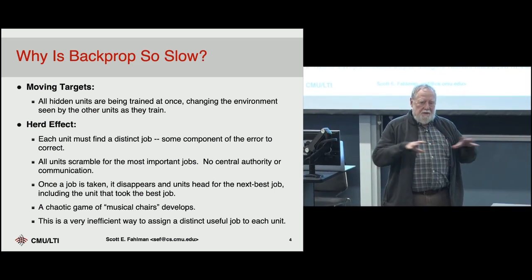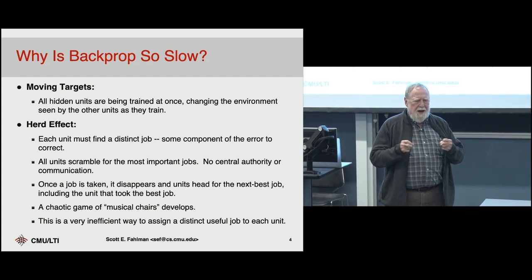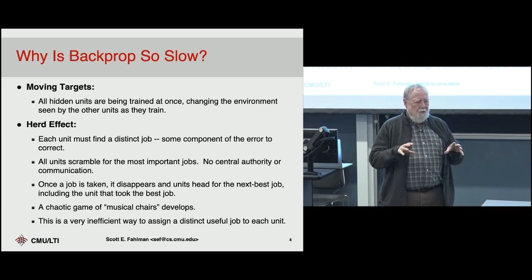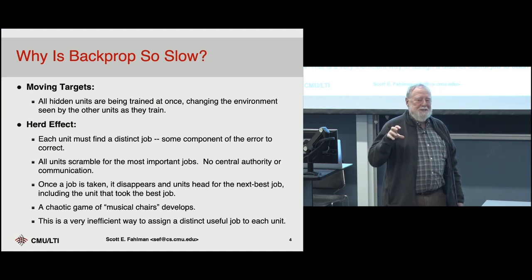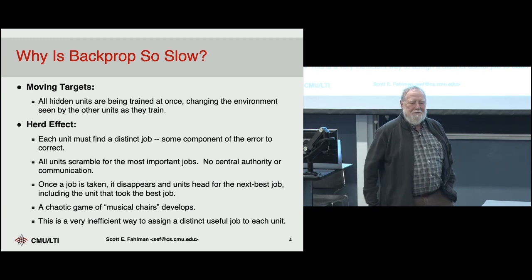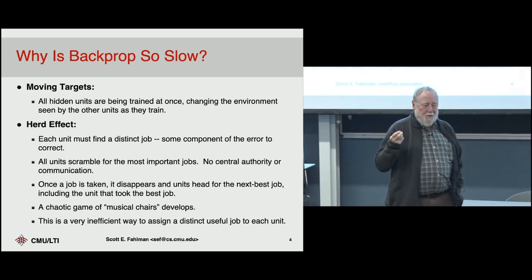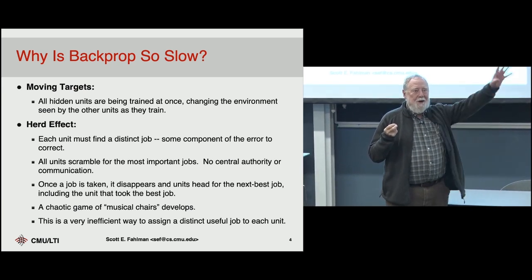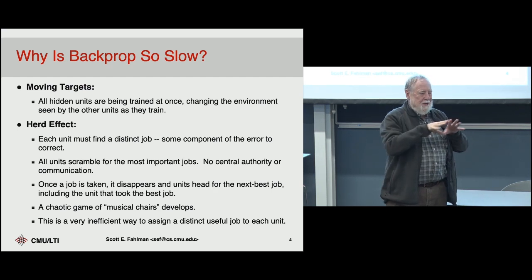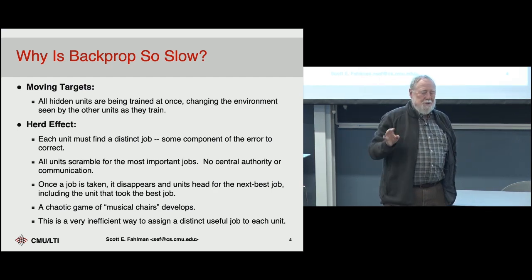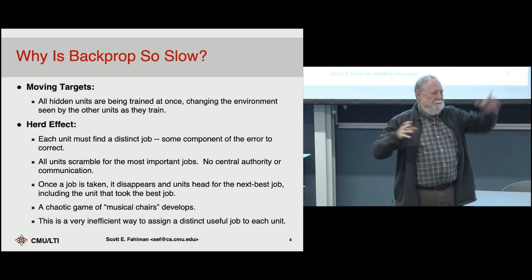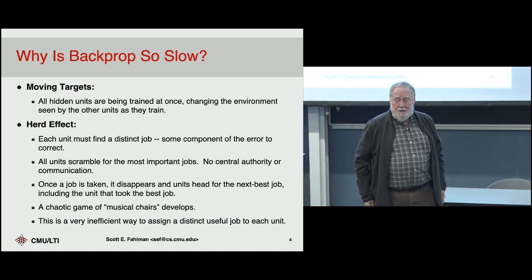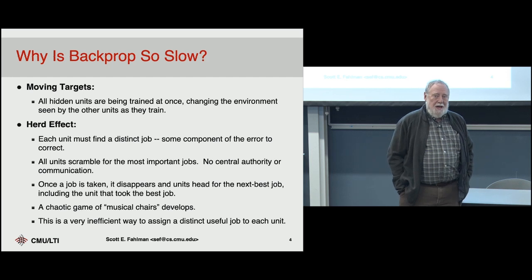The key observation was that if you've got a layer of hidden units all learning at once, they're really interacting. If you think of it from the point of view of a given hidden unit: I see some error over there, I want to adjust my weights and cancel that. But everybody else is moving at the same time, so this error I'm trying to get to is moving around because everybody else is tuning their weights and canceling part of it.